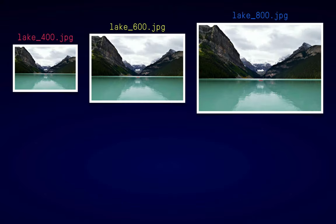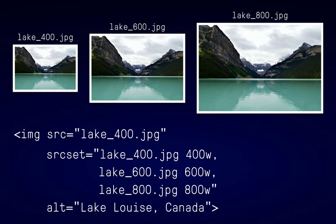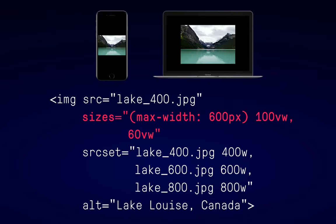For something more complicated, like three different sizes of image, when you reference each image in the srcset you need to instruct the browser how big those images will be by putting a pixel value after each image URL. Then you need to tell the browser how big the image will be rendered at. If the image will be rendered at different sizes depending on the viewport, you can add media queries to the sizes attribute. This markup has to be duplicated for every image you want to serve this way, and kept in sync with the CSS that's actually rendering the image.